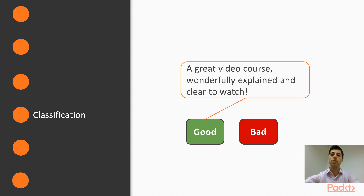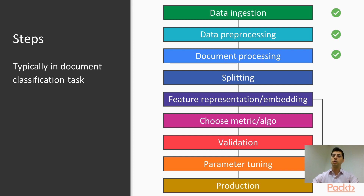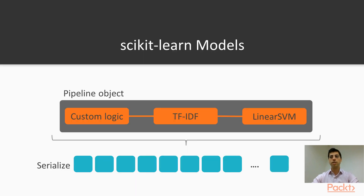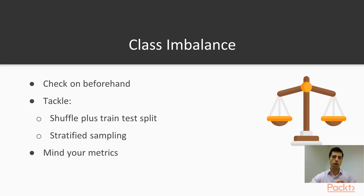The next section is dedicated to text classification — the categorization or labeling of documents according to their contained features, in a supervised way. We'll have a look at the pre-processing that's needed, some popular algorithms, and have a crack at our own text classifier. We'll also quickly see how deep learning can help in this area.